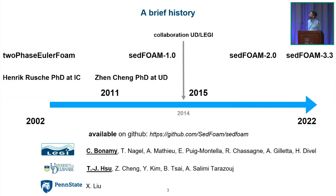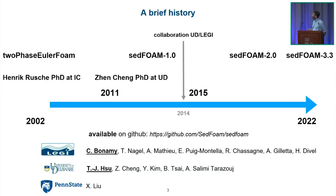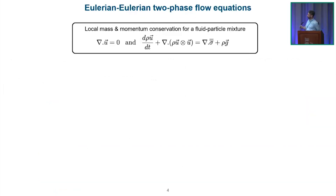A bit of history: we started from the two-phase Euler form of Henrik Brischer from OpenFOAM 2.1, published around 2002. The first PhD student started in 2011 was Zhen Chang, a PhD at the University of Delaware under the supervision of Tom Chu. We entered the game working at LEGI in Grenoble in 2014, where we started to collaborate on the development of the model. We are now in 2022 at version 3.3. The model is available on GitHub, and there is documentation.